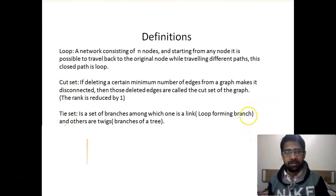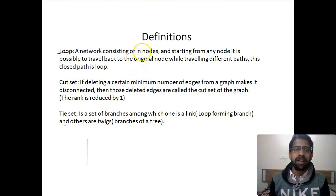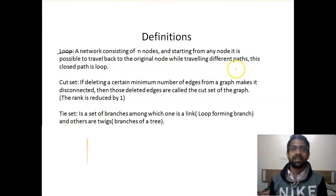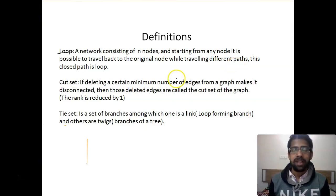What is a loop? A loop is a closed path in a network consisting of n nodes, where starting from any node it is possible to travel back to the original node while traveling different paths. In a tree you do not come back to the original node, but in a loop you must come back to the original node.